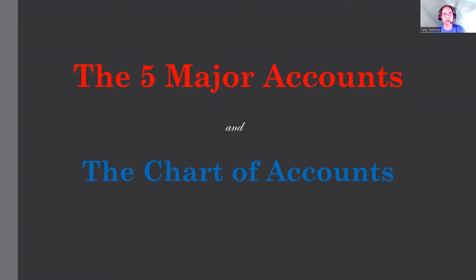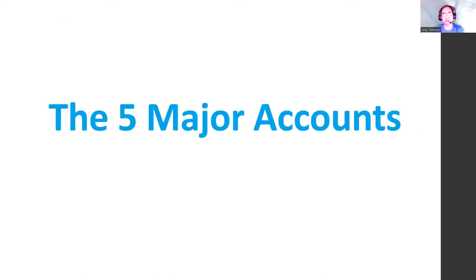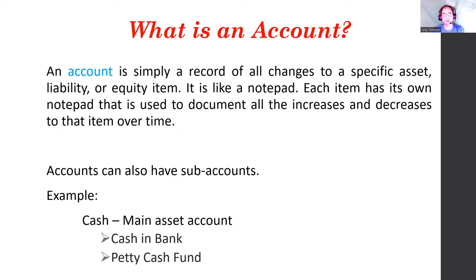The accounting equation — total assets equals total liabilities plus owner's equity — perfectly captures the major accounts. These are the Statement of Financial Position accounts. The Statement of Comprehensive Income has two major accounts: income and expense. So let's talk about the five major accounts. First of all, what is an account?